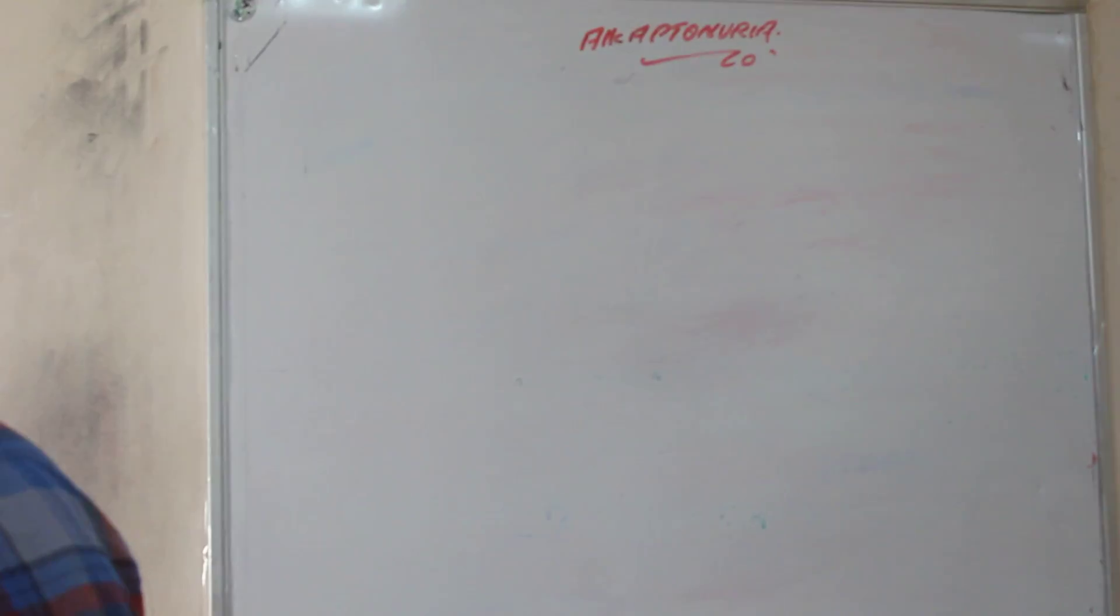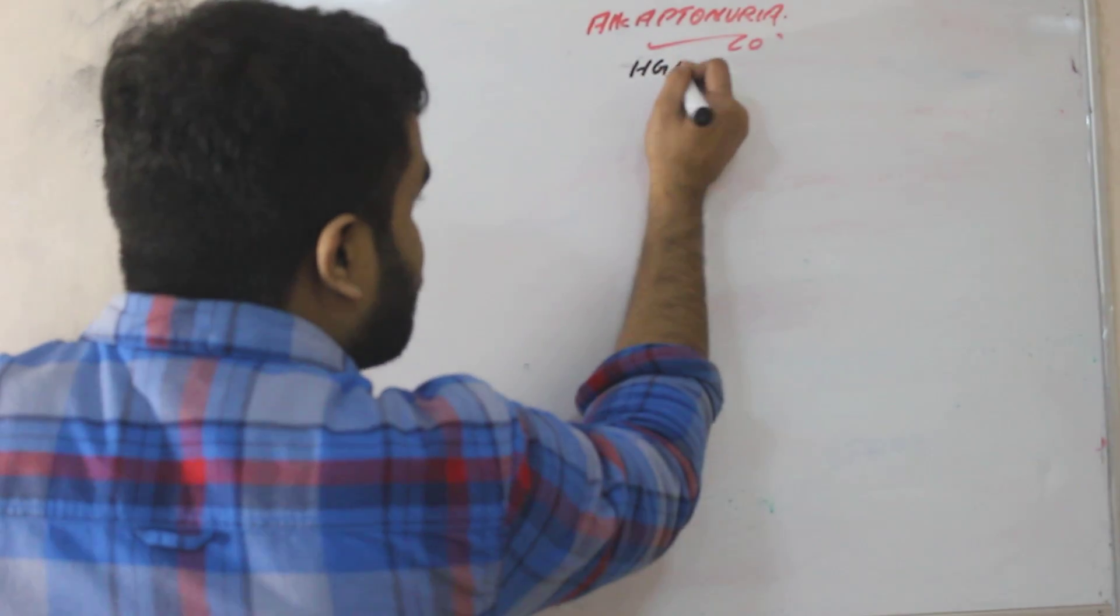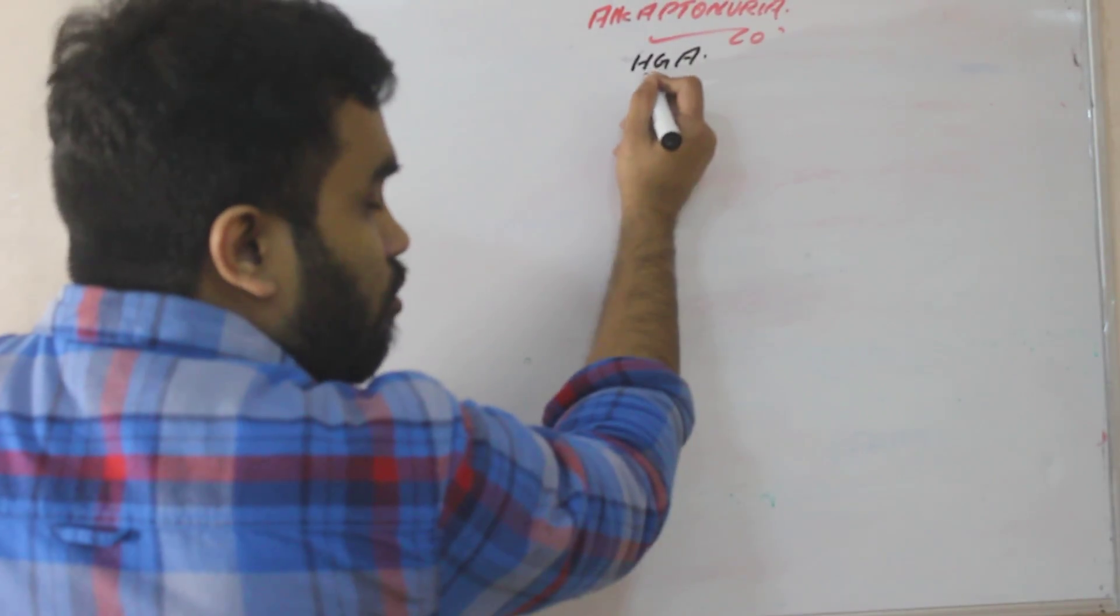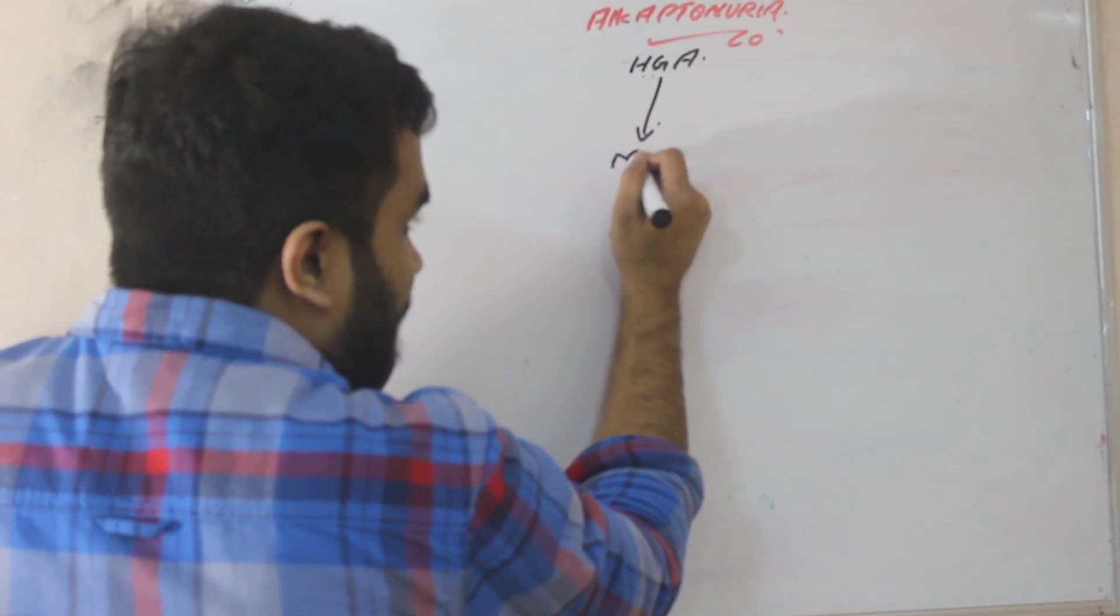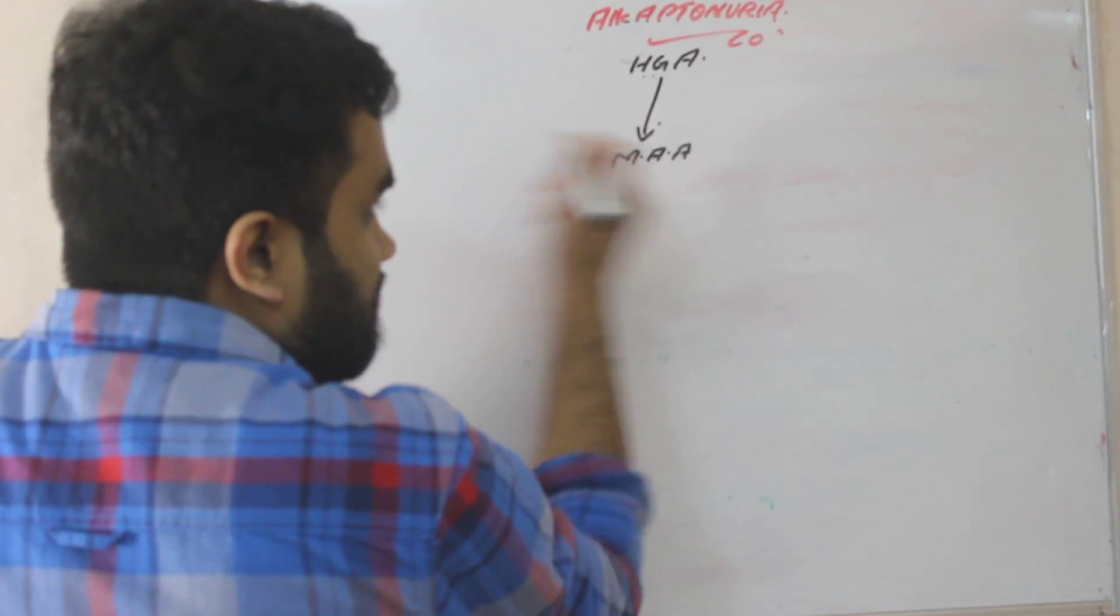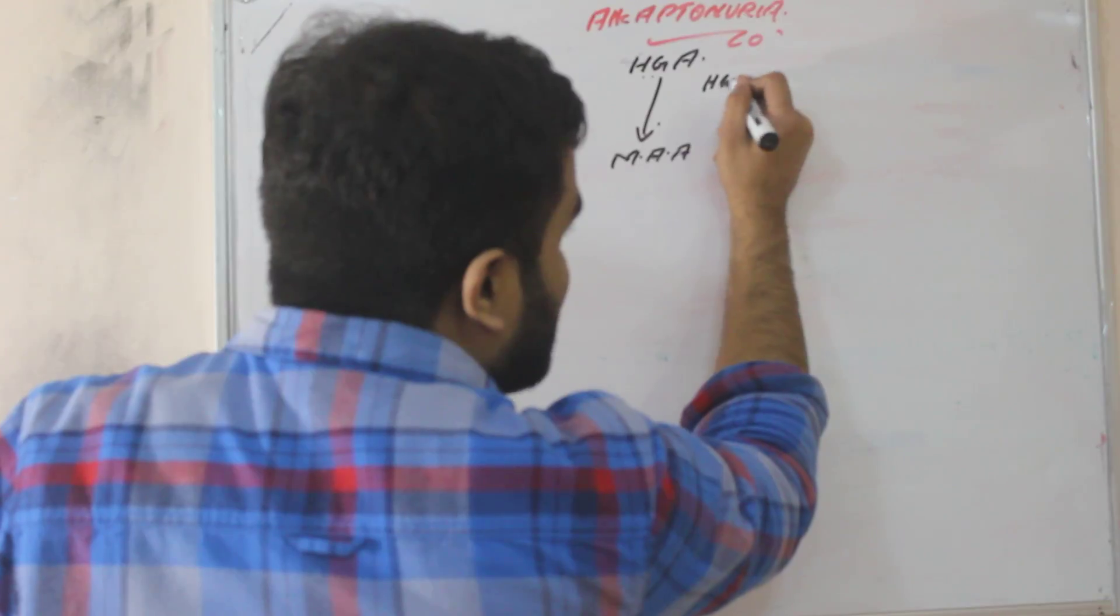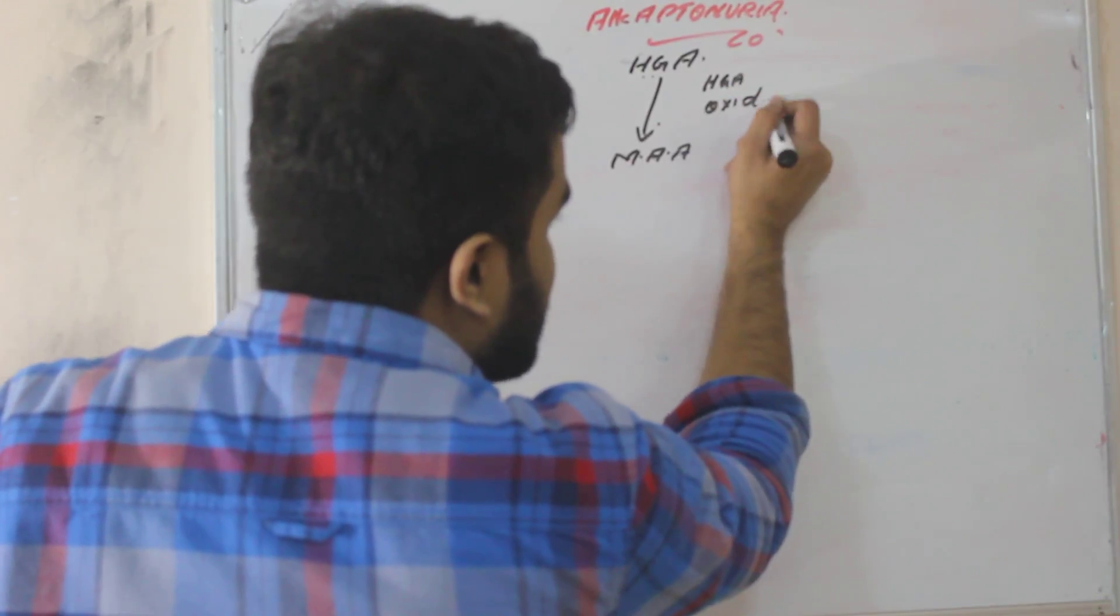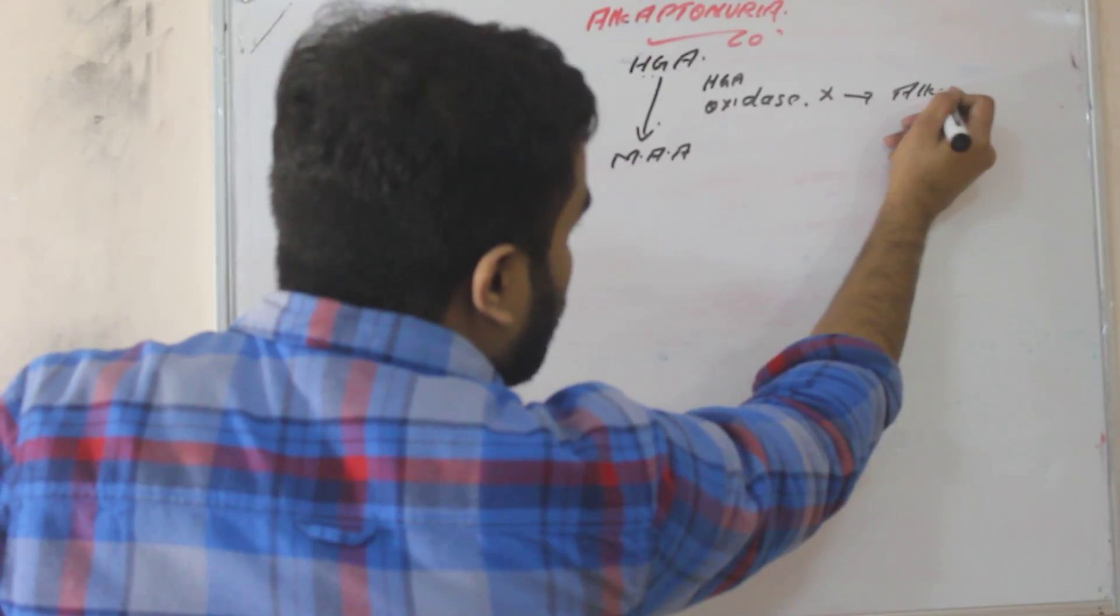Now what is alkaptonuria? Metabolism of homogentisic acid is converted to maleoacetate. You have seen it just before. So what is enzyme here? HGA oxidase. If this enzyme is absent, it cause what? Alkaptonuria.